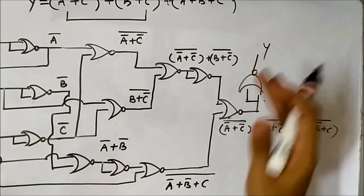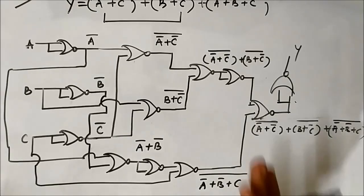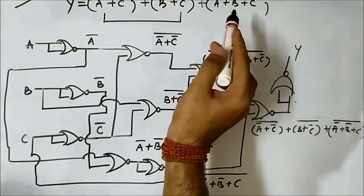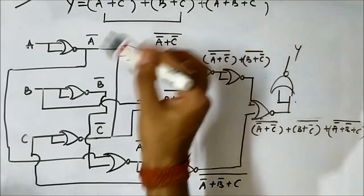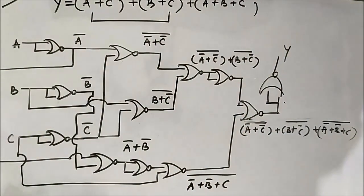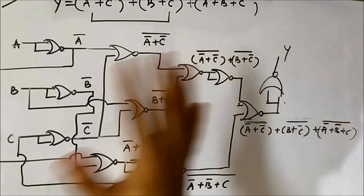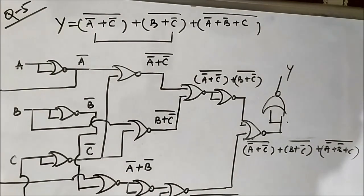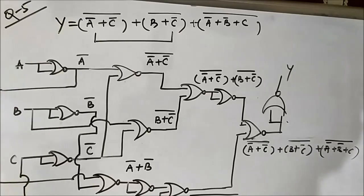This is the required circuit diagram. It is a bit lengthy because of the number of NOR gates needed due to the multiple terms and variables. If at any point you don't understand, pause, practice in rough, and then carry on forward. This is the fifth question on NOR gate implementation. I hope you liked this video — please subscribe to Engineering Tutorial for more videos related to electrical, electronics, instrumentation, and communication engineering. Have a great day, thank you.